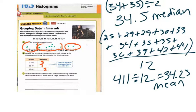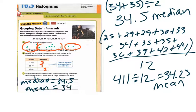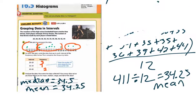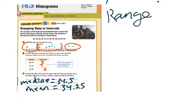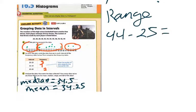So I have a median of 34.5 and a mean of 34.25. The next thing they want to know is the range. That's my highest number minus my smallest number, so I take 44 minus 25, which gives me 19 for my range.